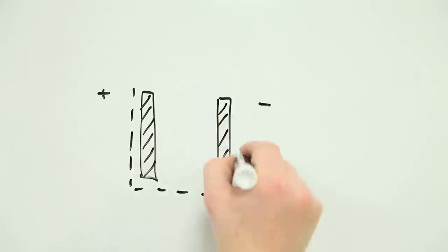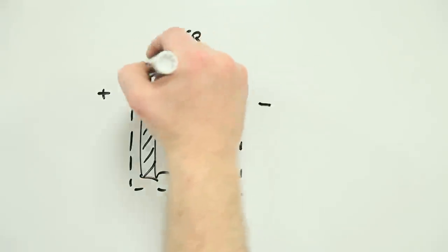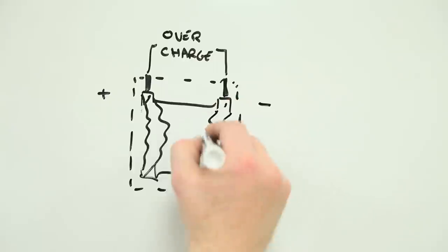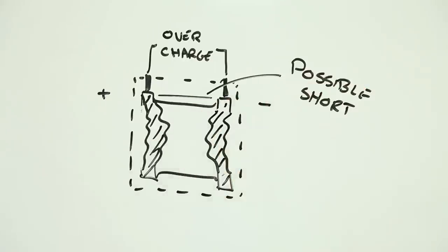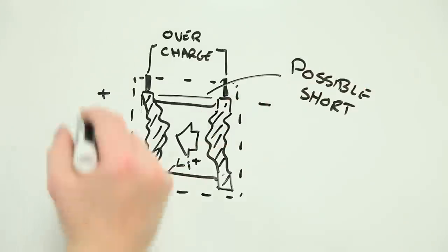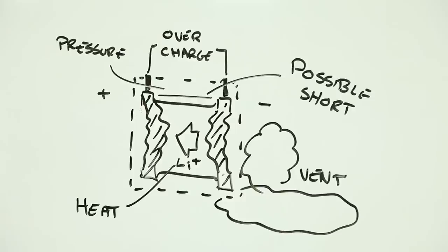Internal short circuits can be caused by rough handling, but overcharging can also cause problems and turn a high hazard but low probability product into something you probably don't want to hang around with for any length of time.